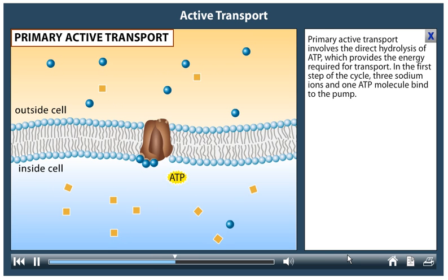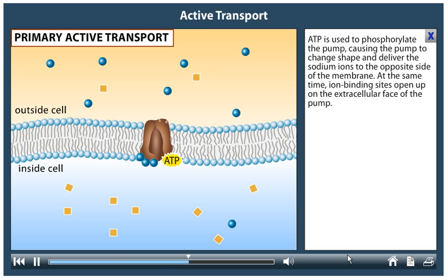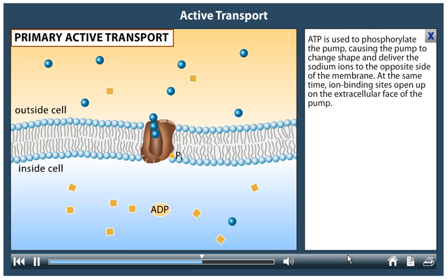In the first step of the cycle, three sodium ions and one ATP molecule bind to the pump. ATP is used to phosphorylate the pump, causing the pump to change shape and deliver the sodium ions to the opposite side of the membrane.